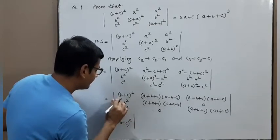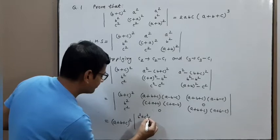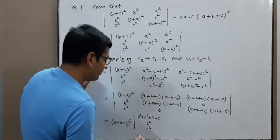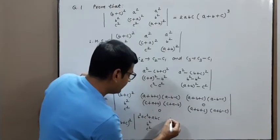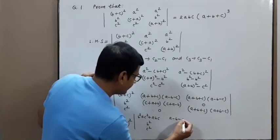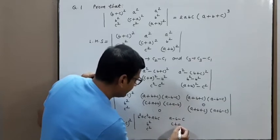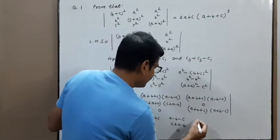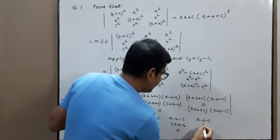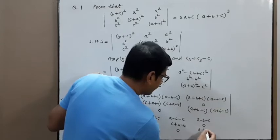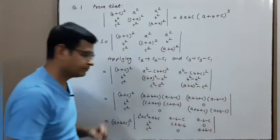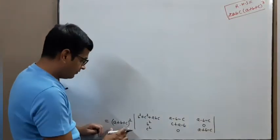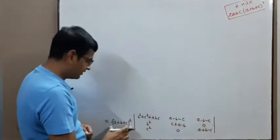Now simplify: b²+c²+2bc gives (b+c)², with b² and c². The determinant now has entries: (a−b−c), (c+a−b), and 0 in one column; and (a−b−c), 0, (a+b−c) in another column. We have extracted (a+b+c)² as two factors.